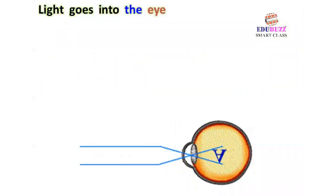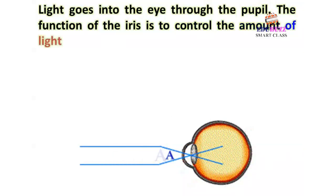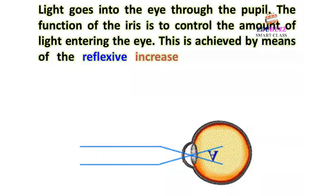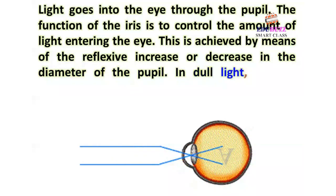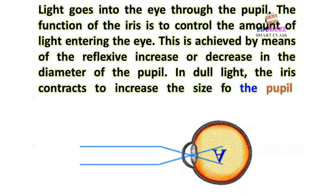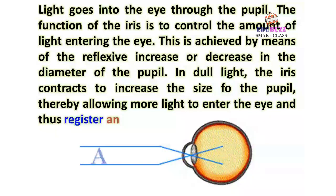Light goes into the eye through the pupil. The function of the iris is to control the amount of light entering the eye. This is achieved by the reflexive increase or decrease in the diameter of the pupil. In dull light, the iris contracts to increase the size of the pupil, thereby allowing more light to enter the eye and thus register an image.